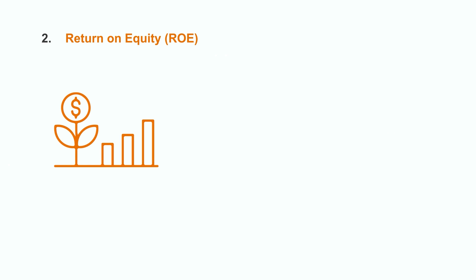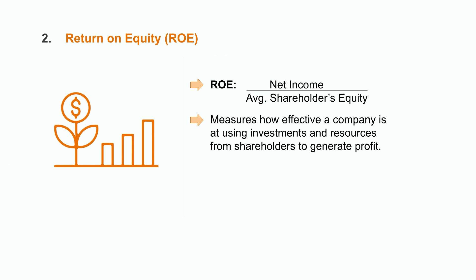Another important ratio that investors are very interested in is called return on equity. This ratio measures how effective a company is at using the investments and resources that they've received from shareholders to generate profit in the business. To calculate this, we would use both the income statement and the balance sheet to gather the data for the calculation. For example, if a company's return on equity is 20%, this means that every dollar of shareholder's equity infused into the company generates 20 cents of pure profit. The higher this number is, the more efficient a company is being with the funds they have invested into the organization.